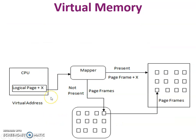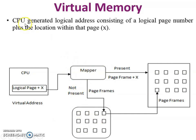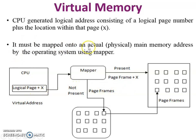In this figure, we have the CPU, main memory, secondary storage, and a memory mapper. First, the CPU generates a logical address consisting of a logical page number plus the location within that page. This virtual address — logical page plus location — must be mapped onto an actual physical main memory address by the operating system using the mapper.